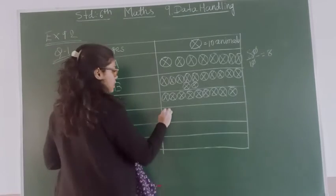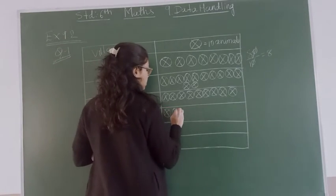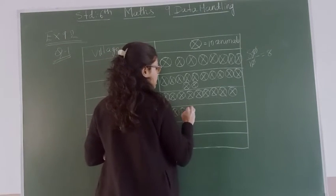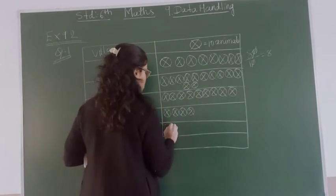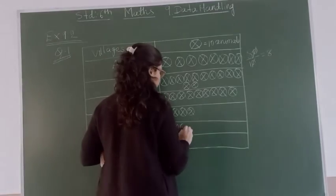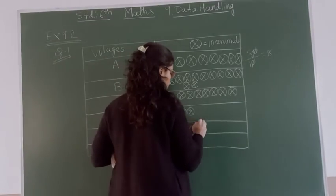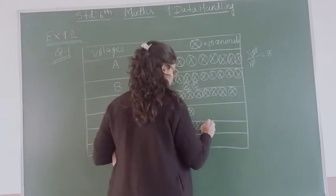Then village D has 40, so 4 symbols: 1, 2, 3, and 4. And village E has 60, so again I have to draw 6 symbols.